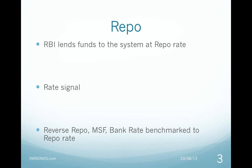RBI wanted to make funds costlier in the system to prevent speculation in the Indian rupee that was trending at record lows to the US dollar. Bank rate is also pegged at MSF rate at 100 basis points over repo, which was increased to 300 basis points after MSF rate was hiked. Bank rate is largely used as a benchmark for penalties levied on banks flouting regulatory norms.